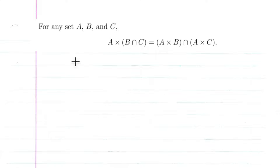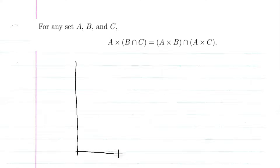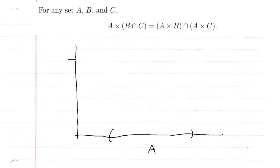Before we start the proof, let's draw a picture to illustrate what's going on. So we'll call this big thing A, and we'll call this piece B and this piece C.